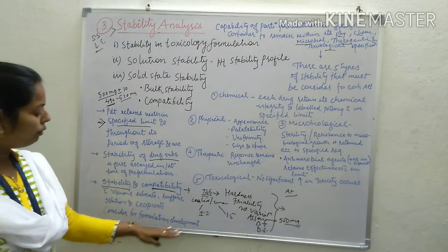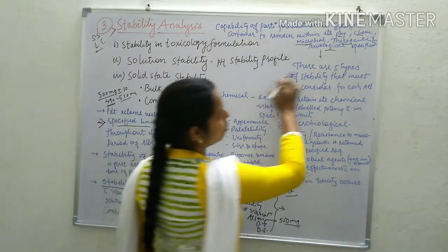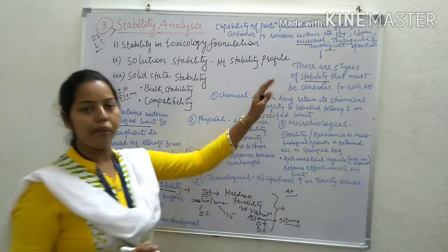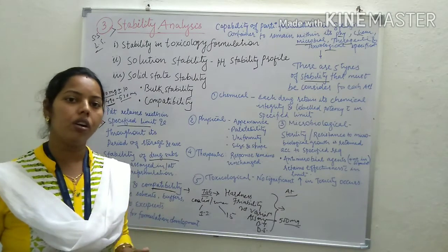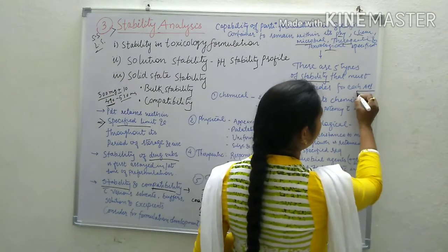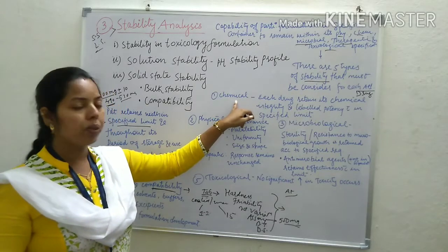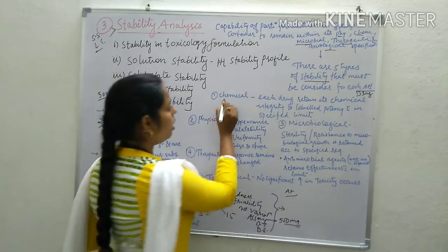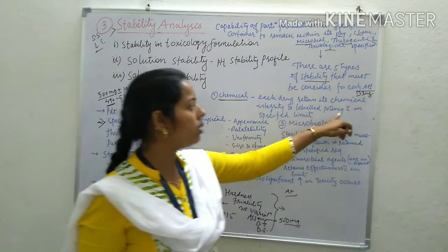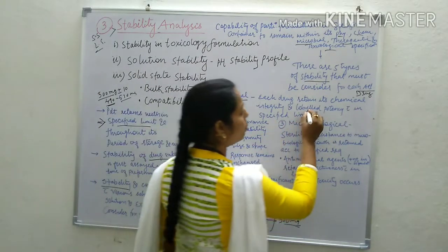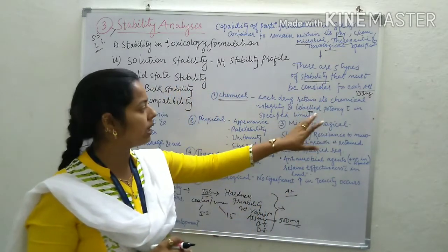When we find out the compatibility within the formula, we will study these five types of stability that must be considered for any drug or API. First is chemical stability, which means the drug retains its chemical integrity and labelled potency. If the labelled potency is a specified value, the drug should retain or possess that level of potency.